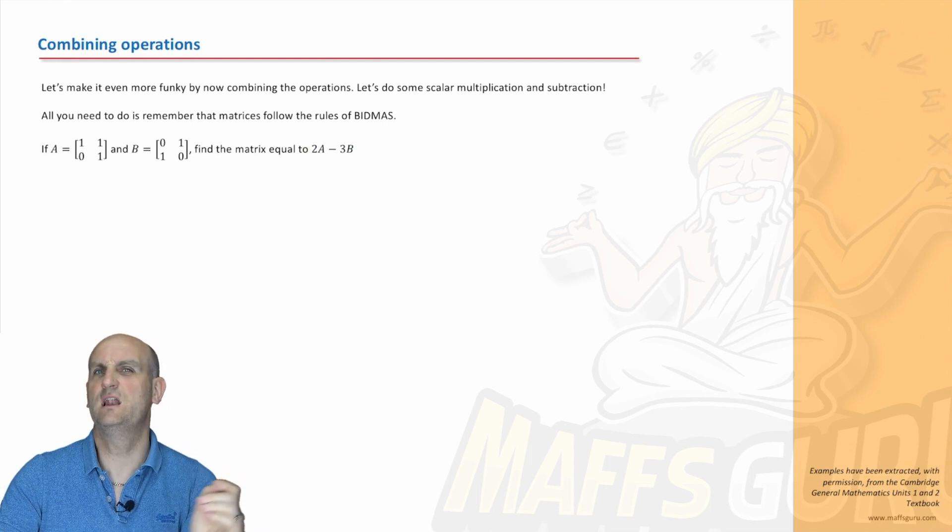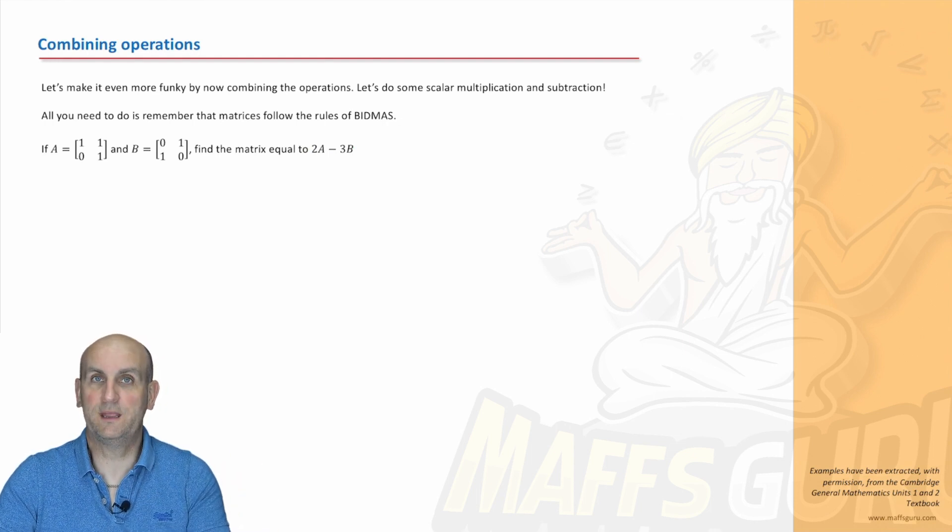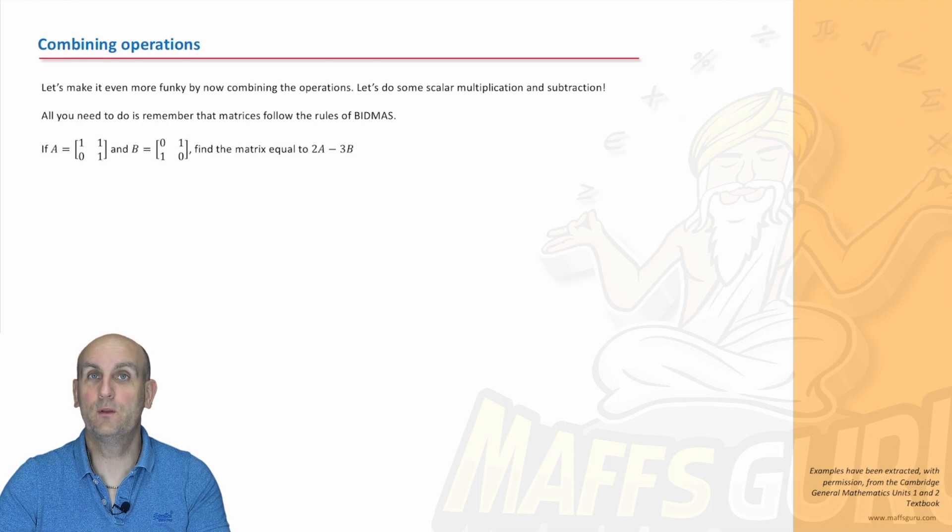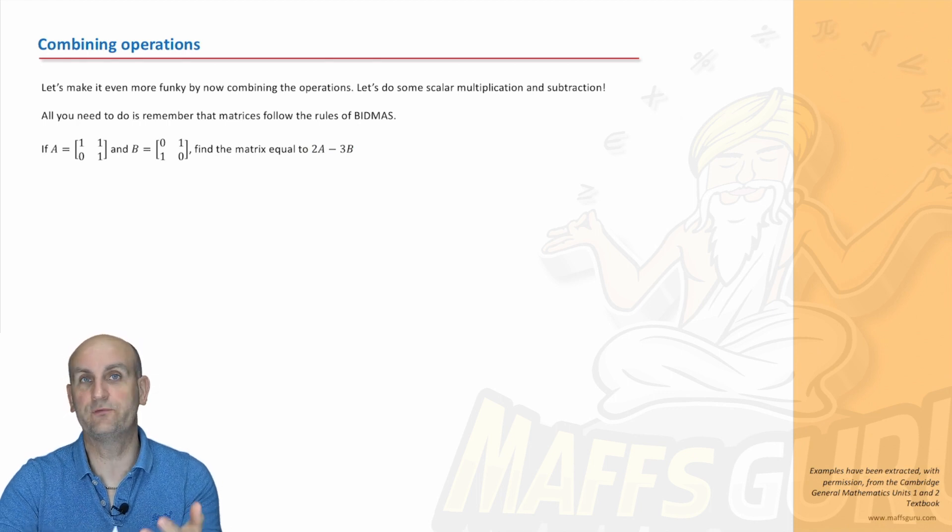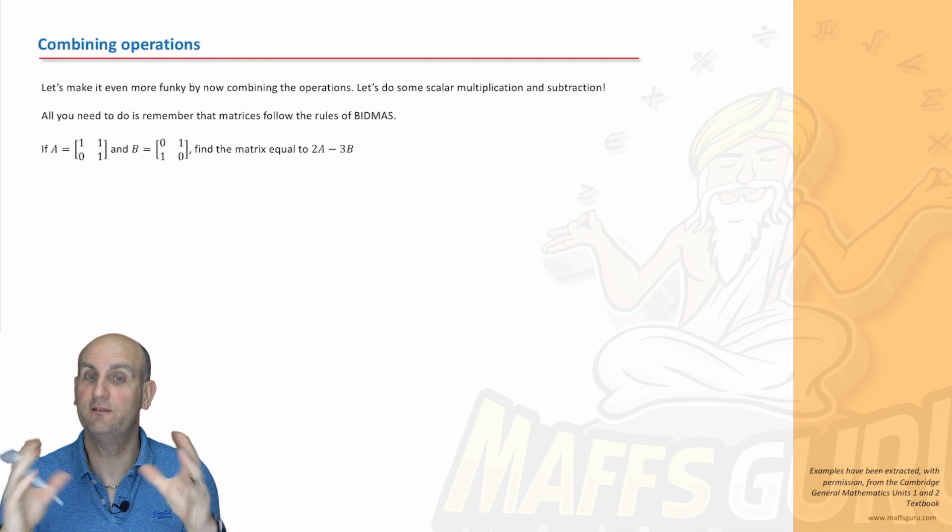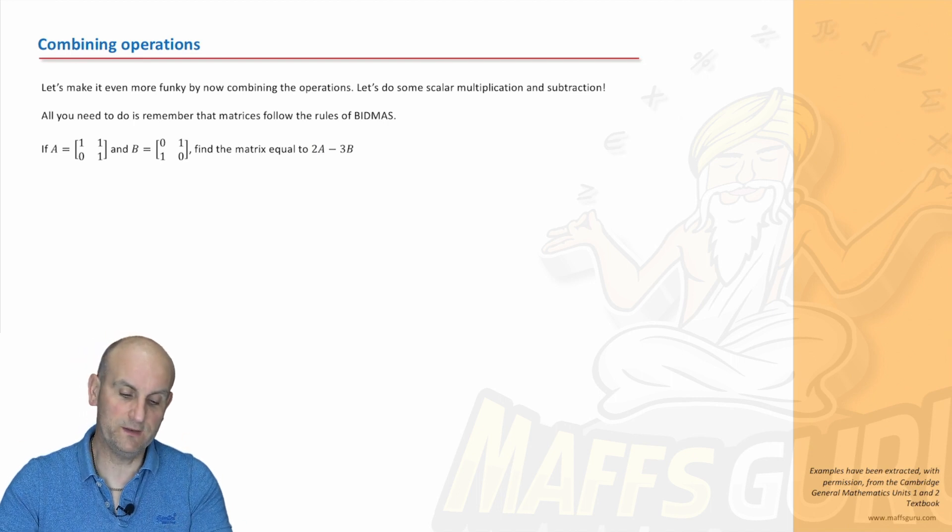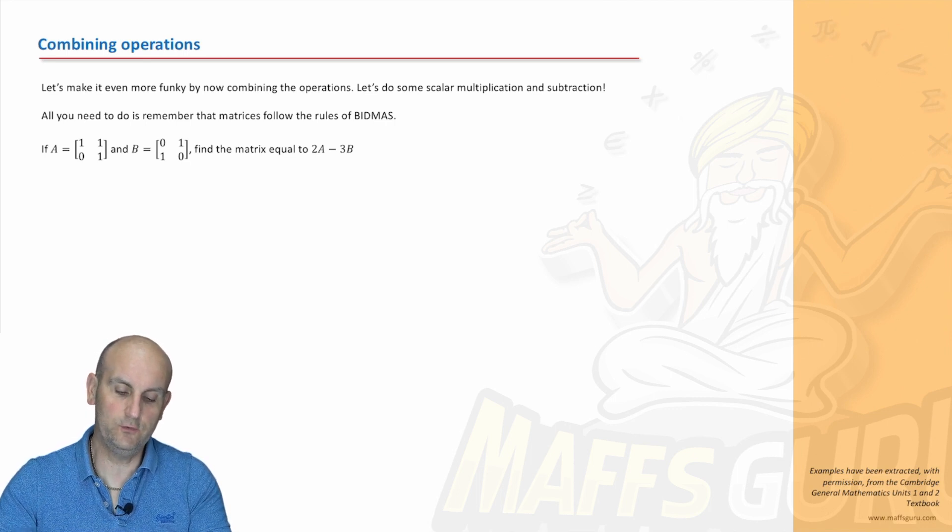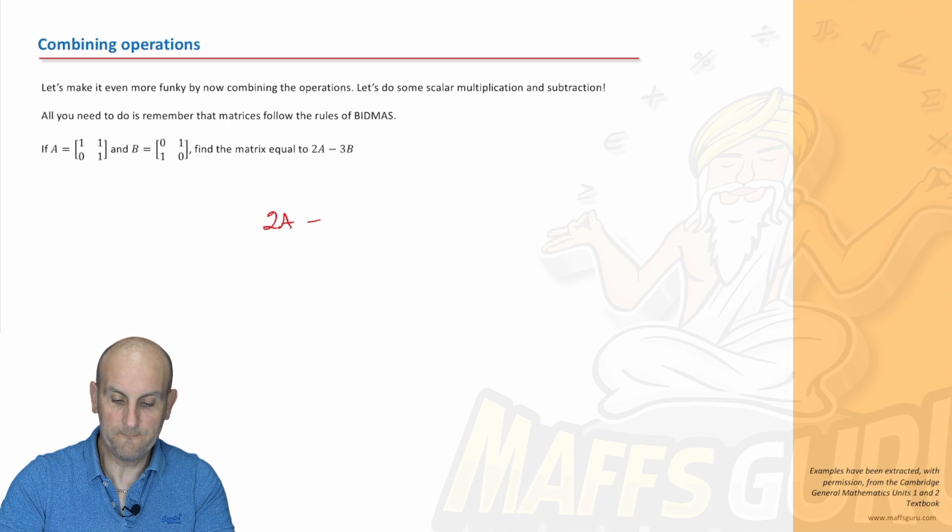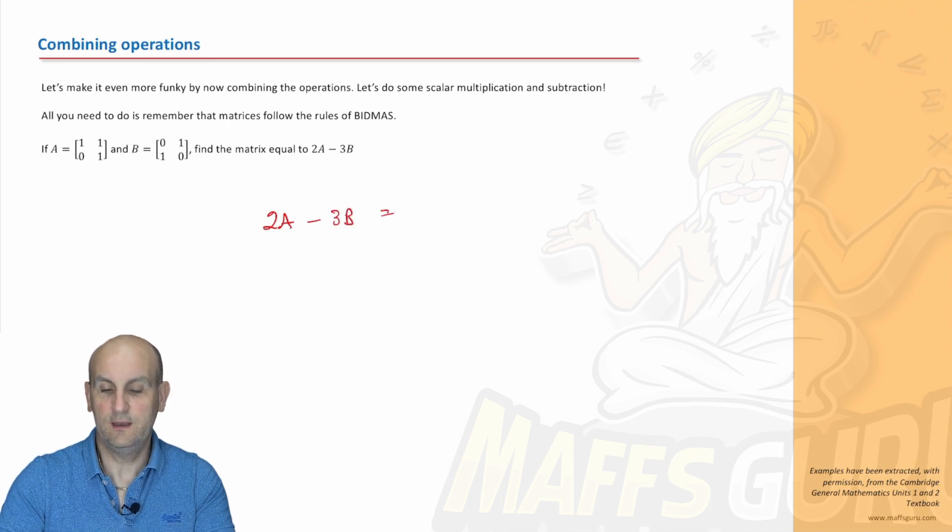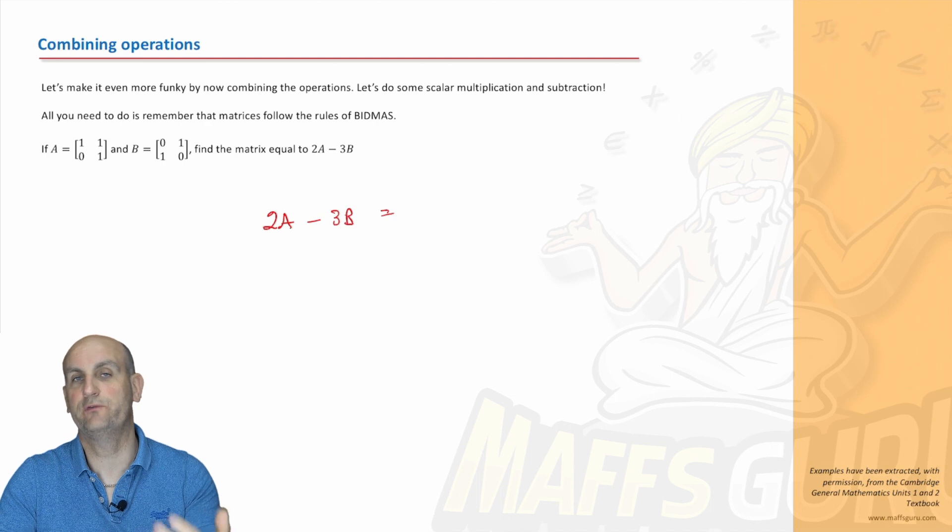Now to move this a little bit more funky and a little bit more complicated. It's not complicated. What am I going to do? I'm going to combine. We've done adding and subtraction and we now know how to do scalar multiplication. So let's mix them together. All right. So we've been told A is 1, 1, 0, 1. B is 0, 1, 1, 0. Find the matrix equal to 2A minus 3B.